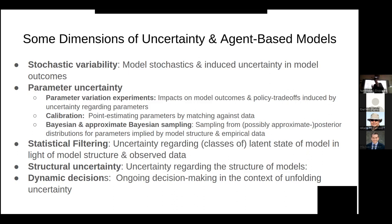Instead of going for one privileged set of parameter value estimates, you're sampling plausible values from a distribution — jointly. So you recognize, for example, that contact rate could be high and transmission probability could be low, or contact rate could be low and transmission probability could be high. You don't privilege one interpretation over the other. You recognize there are many plausible explanations for what we see, each associated with some posterior probability or probability density.